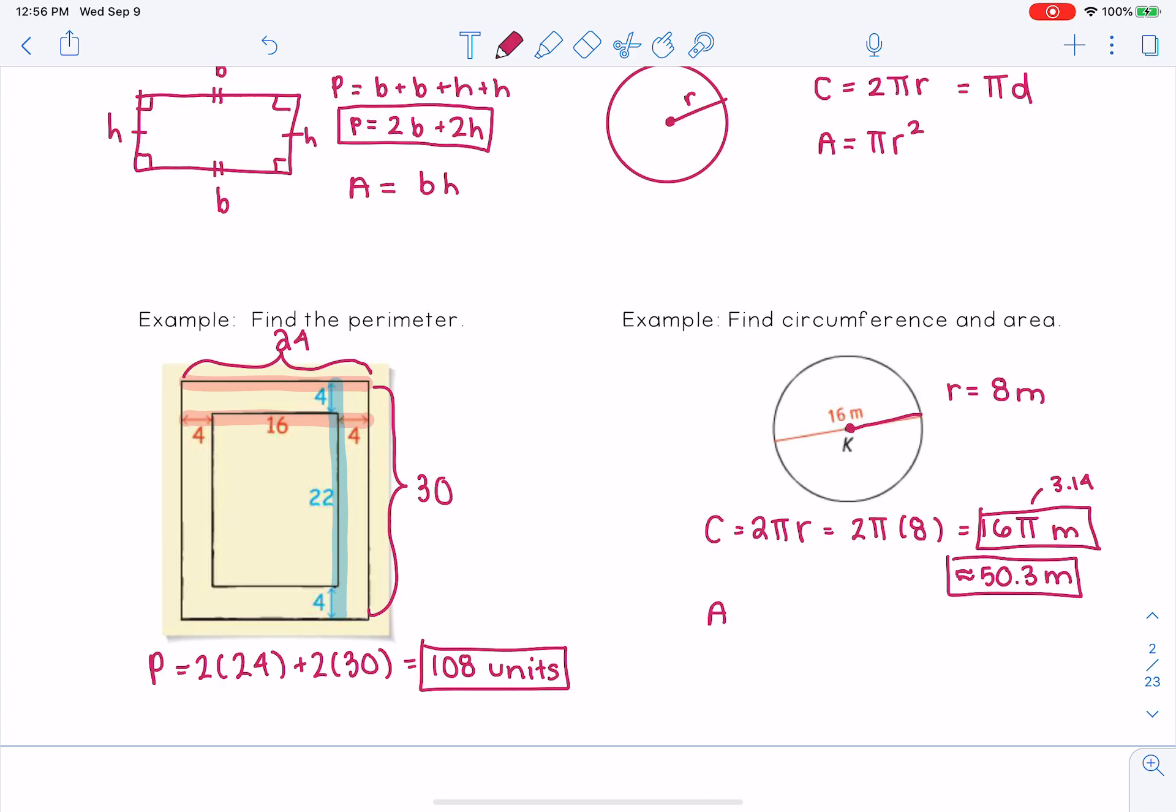Our area is pi r squared, or pi times 8 squared. 8 squared is 8 times 8, which is 64. So this is 64 pi meters squared, because area we use unit squared. Or if we take 64 times 3.14, this is approximately equal to 201.1 meters squared.